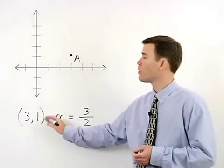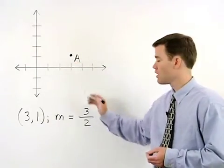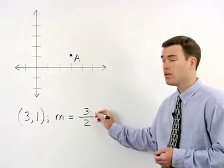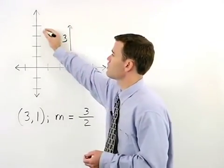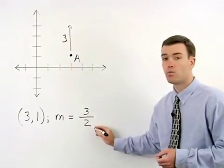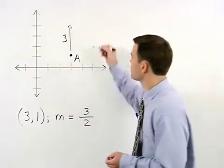So from our original point that we've already plotted, we rise 3 units and run 2 units.